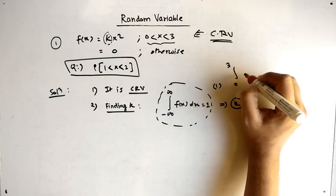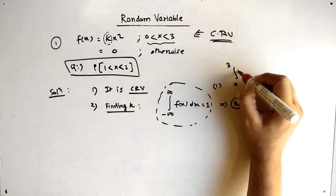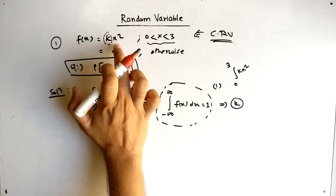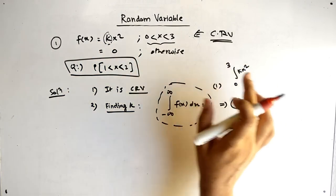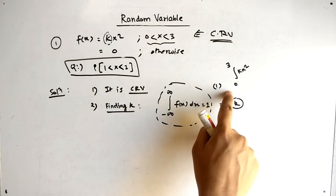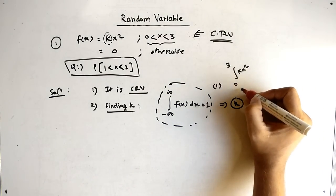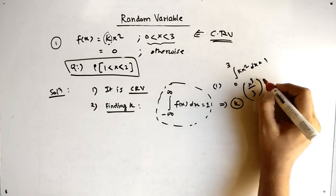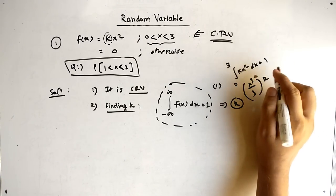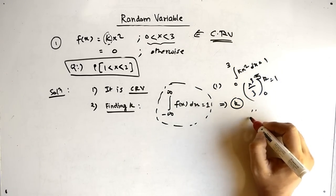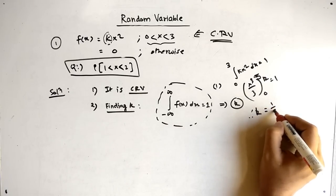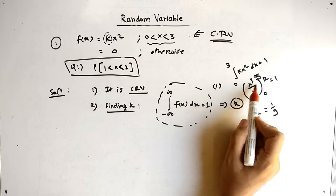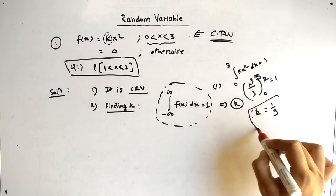We integrate from 0 to 3 because the function f(x) = kx² is valid in that range, and outside it is 0. Solving this integral gives k times x³/3, evaluated from 0 to 3, equal to 1. Therefore k times 3³/3 = 1, which gives k times 9 = 1, so k equals 1/9.